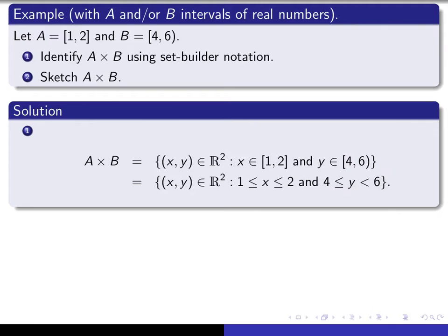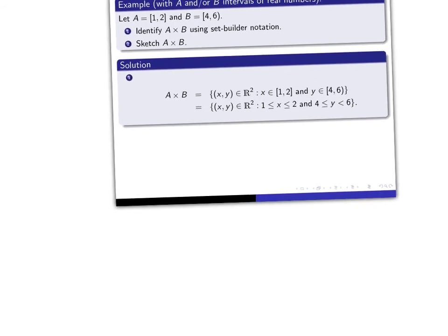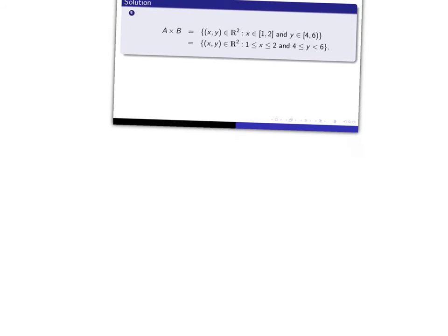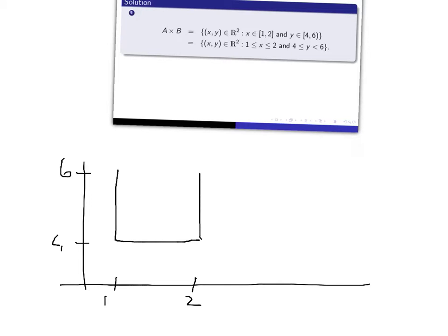Now, what would that look like if we actually drew a sketch of it? So let's have a look. If we drew our xy coordinate system and I'll just use a rough scale, say this is 1 and this is 2, let's say this is 4 and this is 6, then the set of all (x, y) such that x is greater than or equal to 1, less than or equal to 2 and y is greater than or equal to 4 and strictly smaller than 6 would be all of the points in this region that would include the points on the boundary here but not include the points in the top. Okay, so it's a rectangular region in the R² plane.